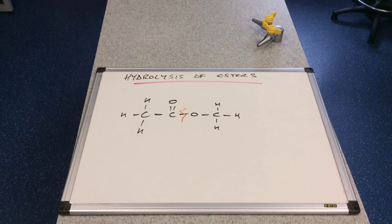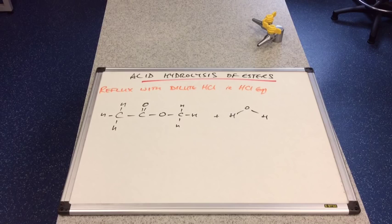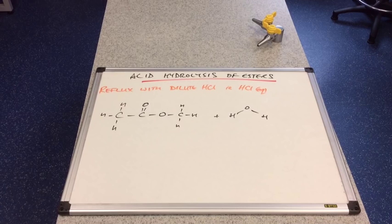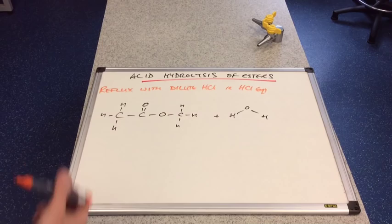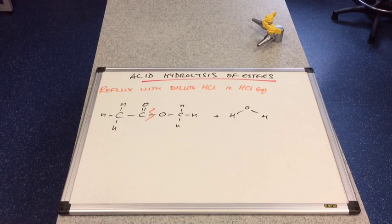So we'll deal with acid hydrolysis first. The conditions for the reaction are you need to reflux the ester with some dilute aqueous acid. So I'm choosing hydrochloric acid for this one. You could use dilute sulfuric acid. So this is the start of our equation here. Remember we're going to break this bond.